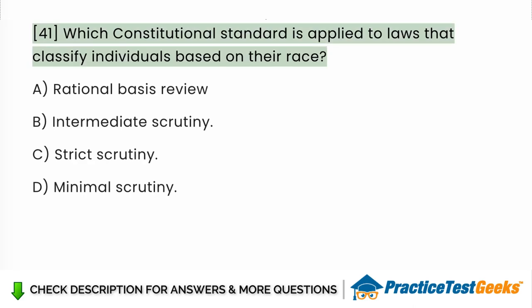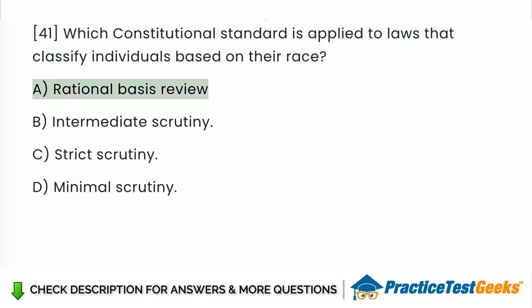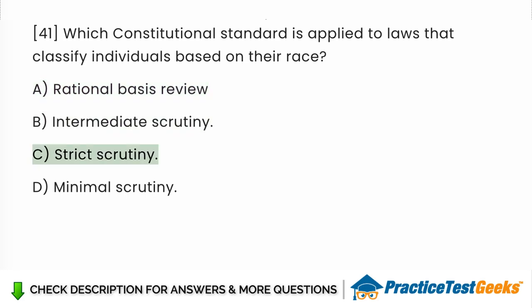Which constitutional standard is applied to laws that classify individuals based on their race? a. Rational Basis Review. b. Intermediate Scrutiny. c. Strict Scrutiny. d. Minimal Scrutiny. Answer: c. Strict Scrutiny.